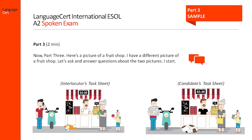In the third part of the spoken exam, the candidate and the interlocutor exchange information to perform a communicative task. The candidate is asked to identify the similarities and differences between his or her picture and the interlocutor's picture by asking and answering questions.